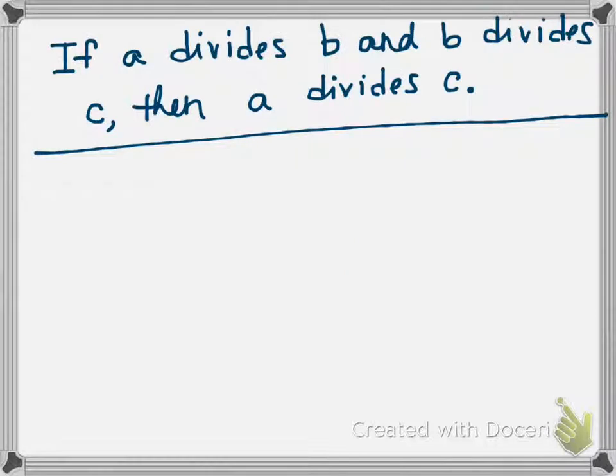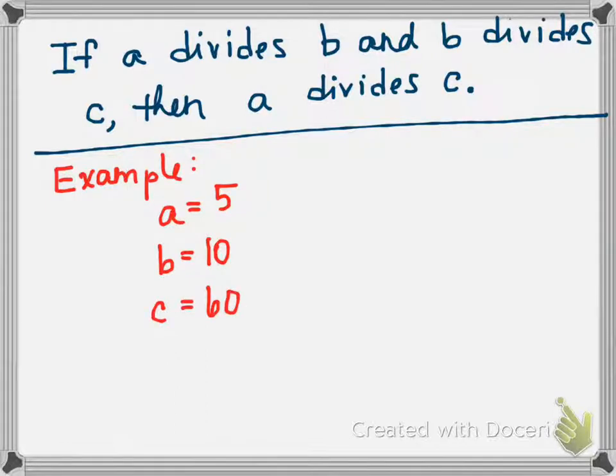So I'm going to go ahead and rewrite this. If A divides B and B divides C, then A divides C. When you're trying to prove a statement, really the first thing that you want to do is make sure you know all the definitions of all the words given, and also make sure that you believe the statement. So let's start by doing an example to make sure we believe it. What is A? What is B? What is C? How does this work?